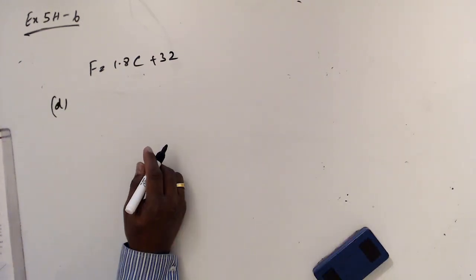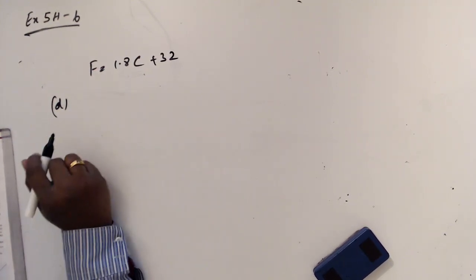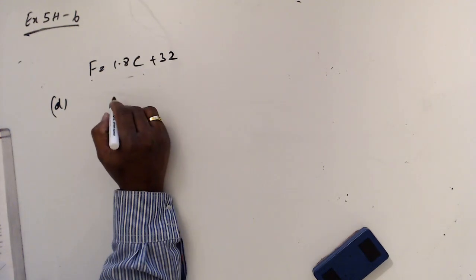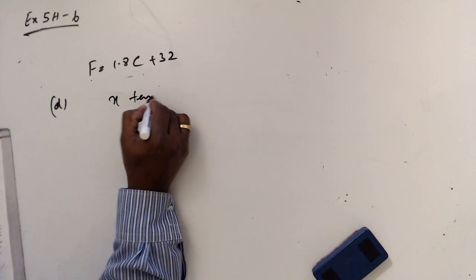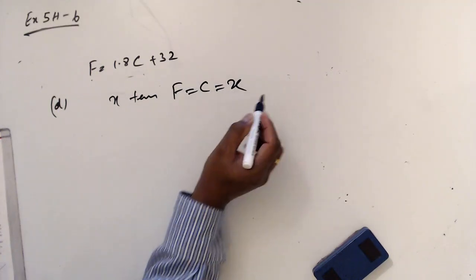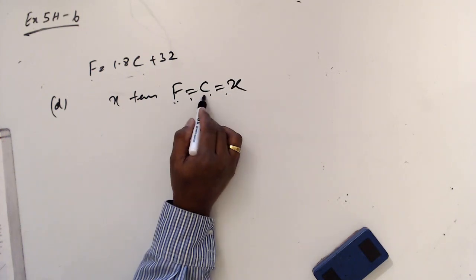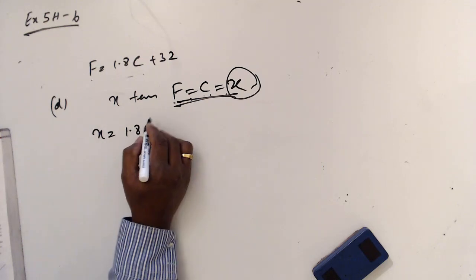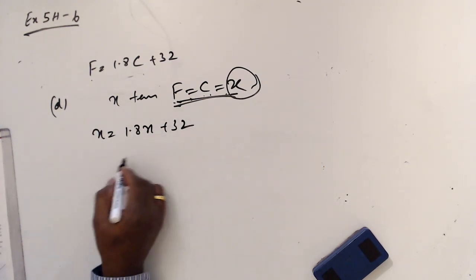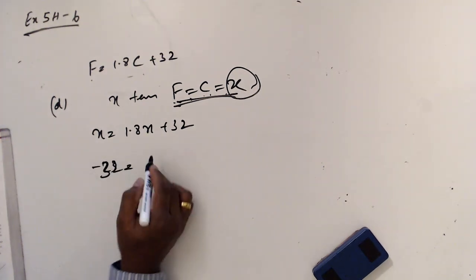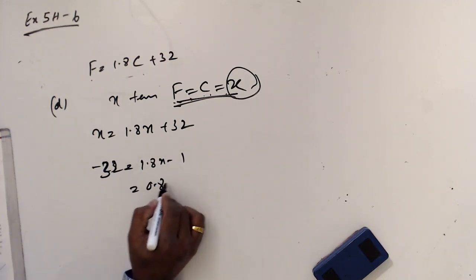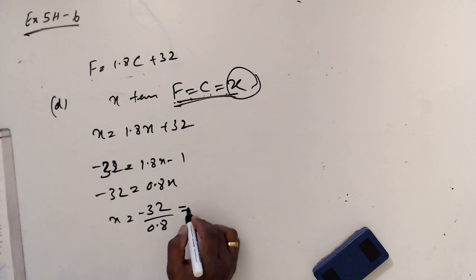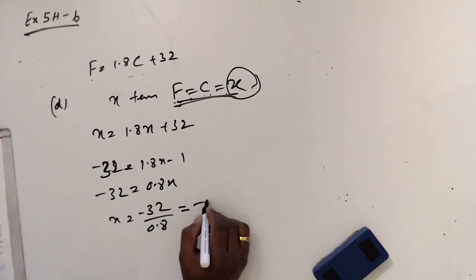In part D, they ask at which temperature both Fahrenheit and Celsius are equal. Assume that at X temperature both F and C are equal. If C and F equal, that temperature is X. Then I will substitute here. X equals 1.8X plus 32. So minus 32 equals 1.8X minus X. 0.8X equals minus 32. X equals minus 32 divided by 0.8, which is minus 40. Now F equals C equals minus 40.